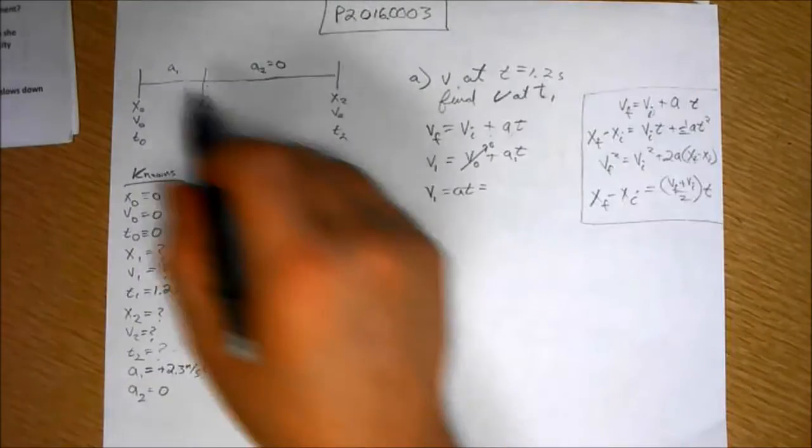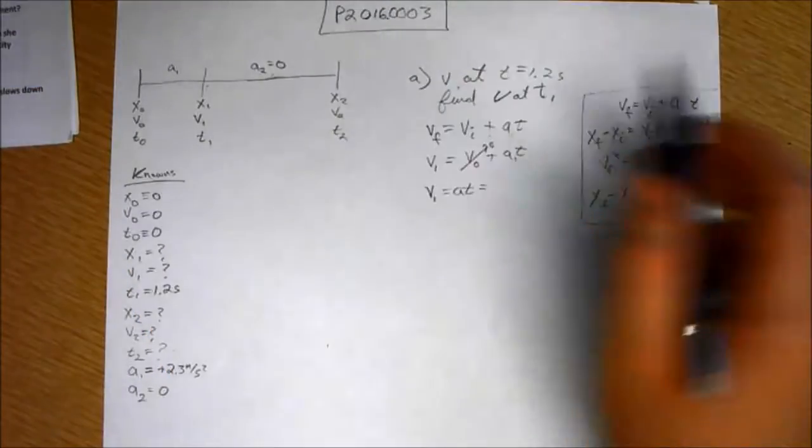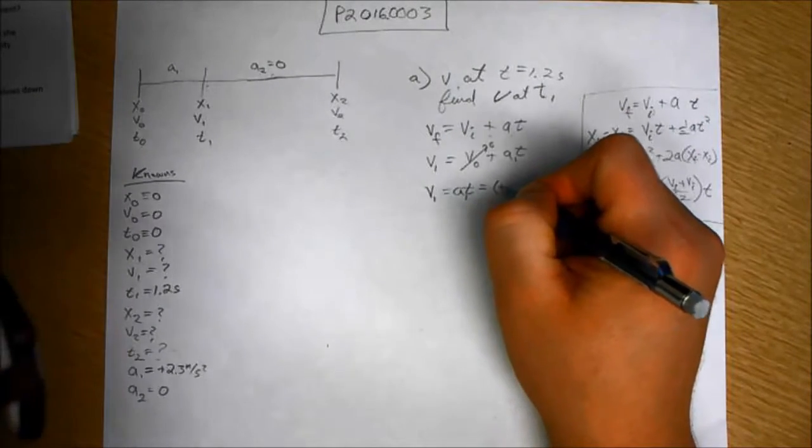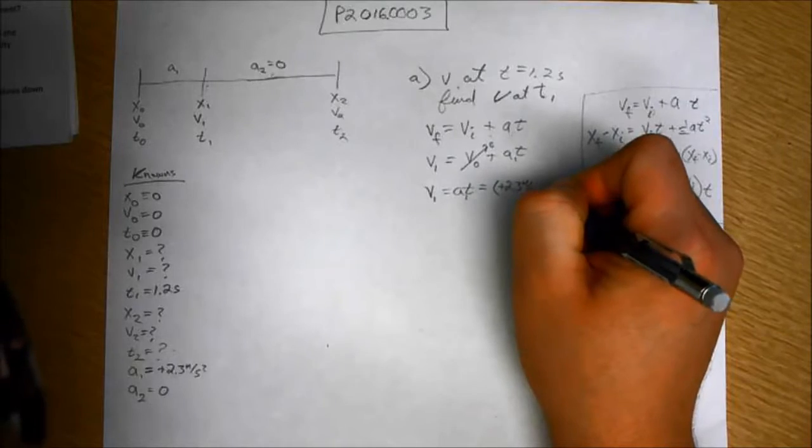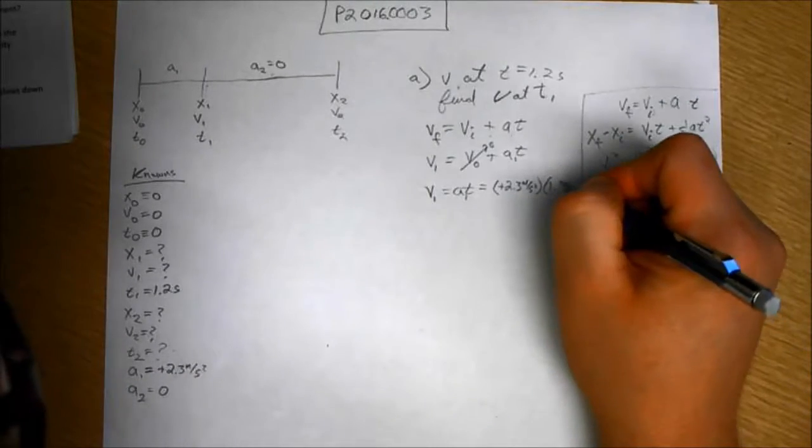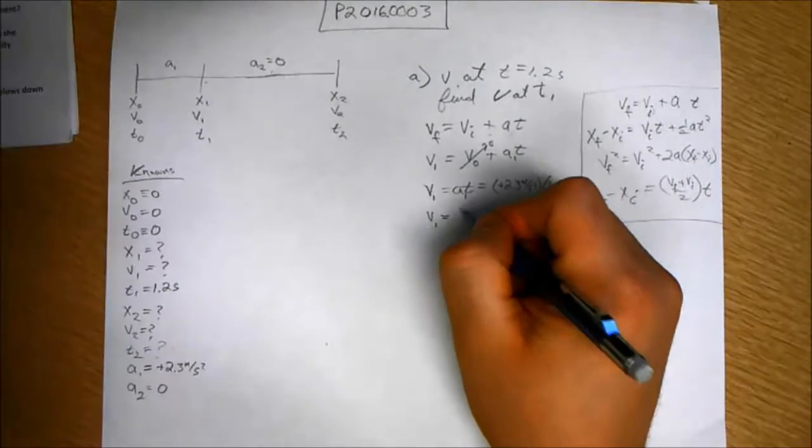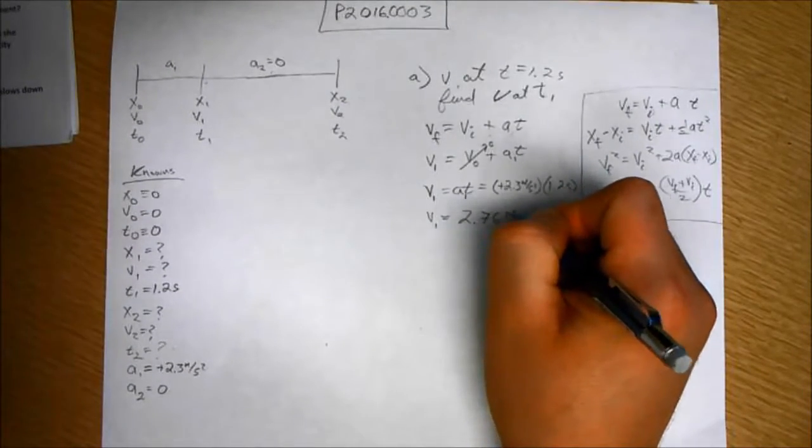So, that's plus 2.3 meters per second squared times time, which is 1.2 seconds. And that is 2.76 meters per second.